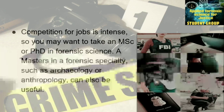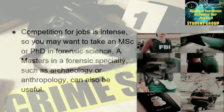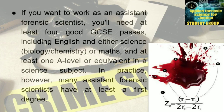A master's in a forensic specialty such as archaeology or anthropology can also be useful. If you want to work as an assistant forensic scientist, you will need at least four good GCSE passes — GCSE being the General Certificate of Secondary Education — including English and either science, biology, chemistry, or maths, and at least one A-level or equivalent in a science subject. In practice, however, many assistant forensic scientists have at least a first degree.